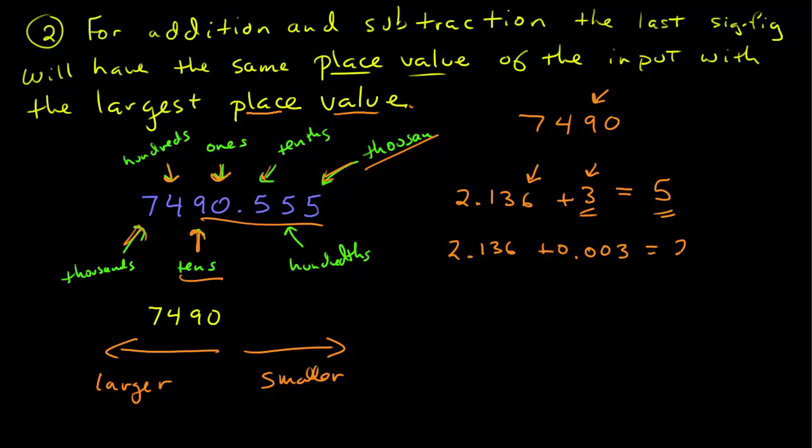If I have 2.136 plus 0.003, this is equal to 2.139. I keep all 4 significant figures here, because the last place value is the thousandths for this number, and the thousandths place for that number. So the thousandths place will be the place value for the last significant figure in the result.